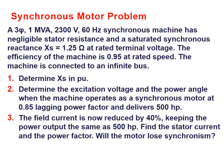Now let's consider how this machine could work as a synchronous motor — also a problem from your homework set. The machine is a three-phase, 1 mega VA, 2300-volt, 60 Hz machine. It has negligible stator resistance, so we do not consider the contribution of RA. The synchronous reactance is considered saturated at 1.25 ohms at rated terminal voltage. The efficiency of this machine is 0.95 at rated speed, and the machine is connected to an infinite bus.